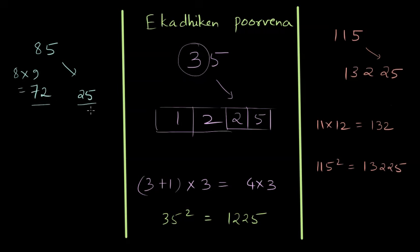So this is the left-hand side part, this is the right-hand side part. We just combine those, and that is the square of 85.